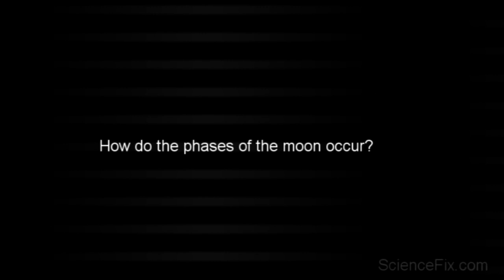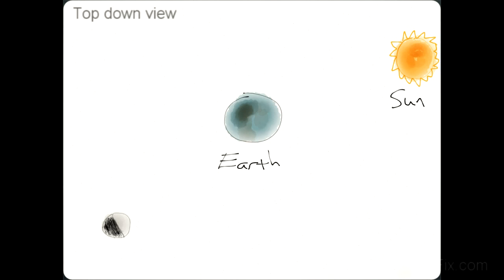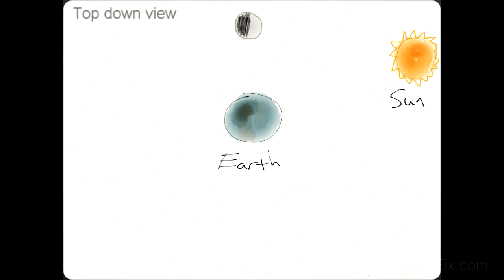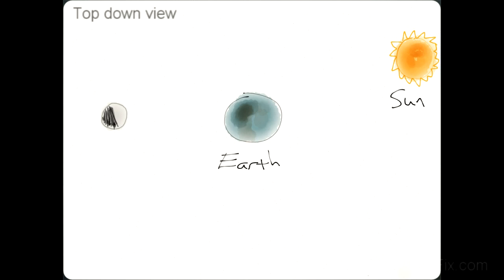Now we're ready to tackle the question of how do the phases of the moon actually occur. Here are a series of illustrations — this is not to scale — showing the moon as it goes around the Earth. It takes 28 days for the moon to go around the Earth, and this is a top-down view. The side of the moon facing the sun is always illuminated; the side not facing the sun is not illuminated. The position of the moon compared to the Earth and the sun determines the phases of the moon.